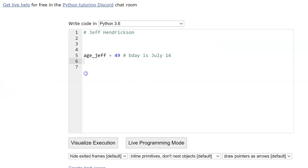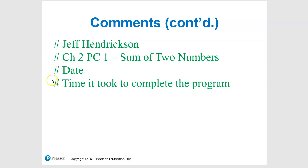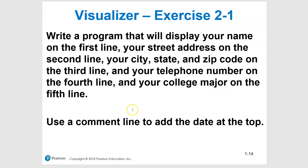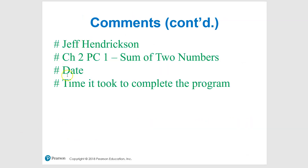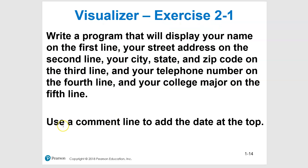So let's play with this example program. This is an exercise from the book — not a programming challenge, but an exercise. Write a program that will display your name on the first line, street address on the second, city/state/zip on the third, telephone number on the fourth, and college major on the fifth. Also use a comment line to add the date at the top — that should be your first line with a hashtag.